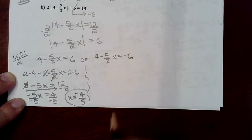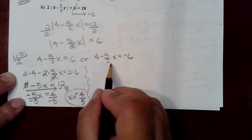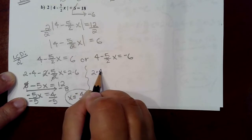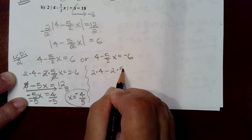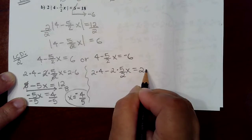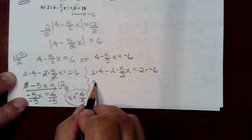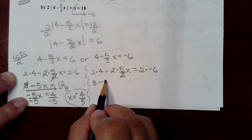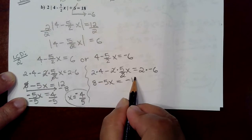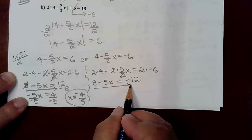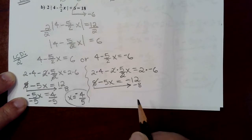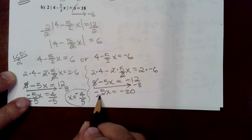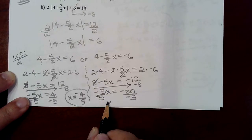Now we do the same steps for the other equation to get rid of the fraction. Multiplying each and every term by the LCD: 2 times 4, minus 2 times the fractional term, equals 2 times negative 6. This gives 8, and the twos cancel leaving negative 5x, and negative 12 on the right. Moving the 8 over by subtracting from each side, we get negative 5x = -20. Dividing both sides by negative 5, x = 4.